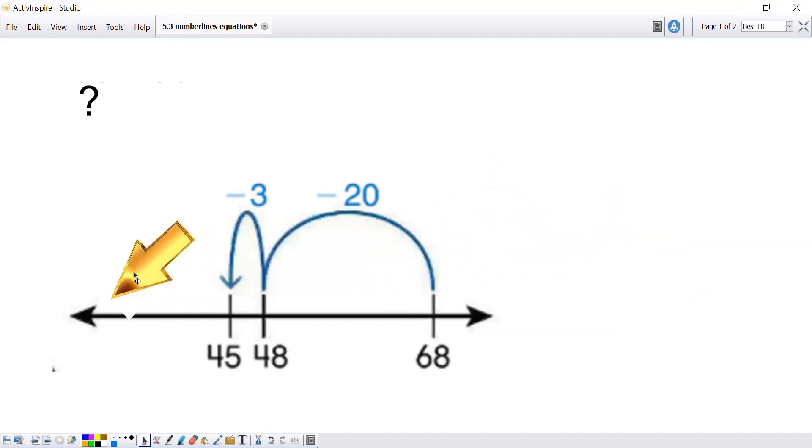This is a number line. A number line shows us amounts of numbers and how numbers can change. Here I see that the end of my number line is 68 and the beginning of my line is 45. As my number line changes, it's showing me whether a number line is increasing or decreasing. Decreasing means the number is becoming smaller. Increasing means the number is becoming bigger.